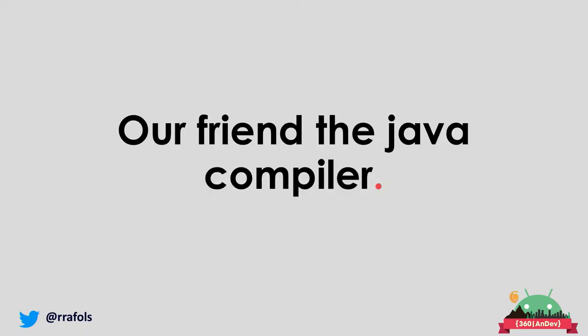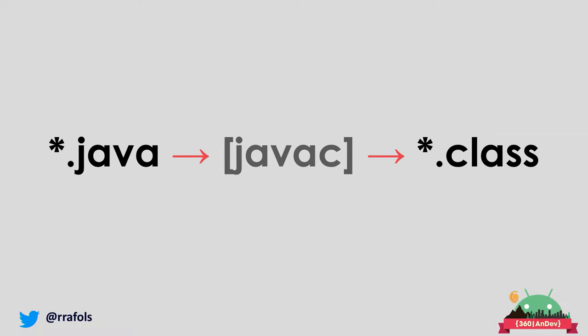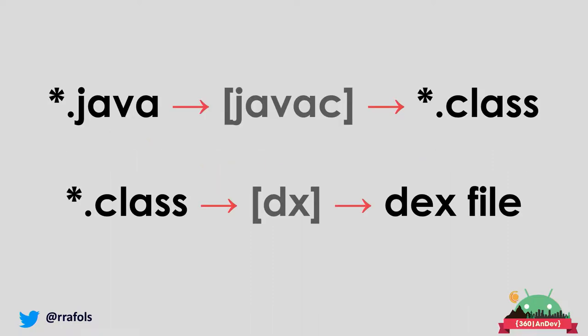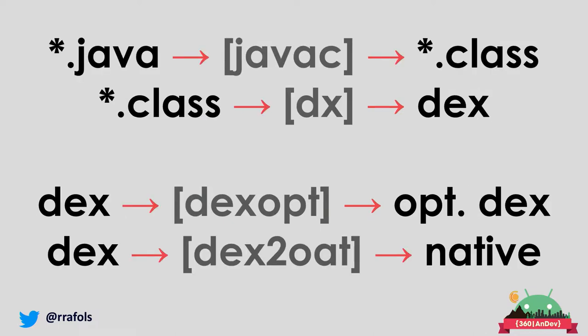I'd like to talk about the Java compiler. We're building for Android, but everything is compiled by Java. We get a .java file, go through the javac compiler, and get a class file. On Android it's not different: Java to class the same way, and class to dex. Then depending on whether it's Dalvik or ART, it can convert to optimized dex or a native file using dex2oat.